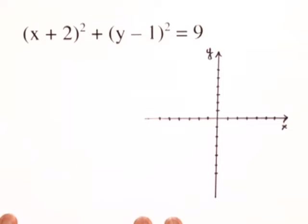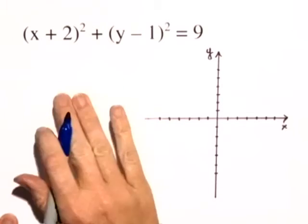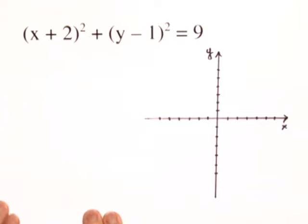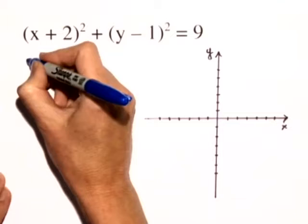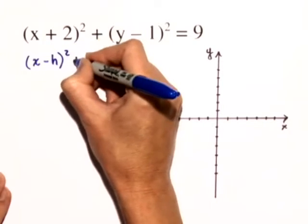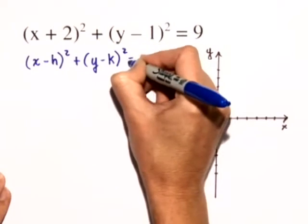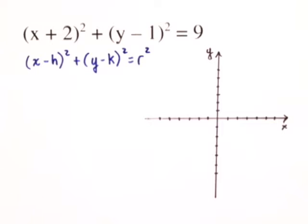We'll graph our next equation in the rectangular coordinate system and then we'll state the domain and the range. We have x plus 2 quantity squared plus y minus 1 quantity squared is equal to 9. So this is a circle in standard form. Remember standard form is x minus h quantity squared plus y minus k quantity squared is equal to r squared.